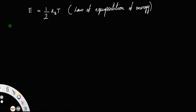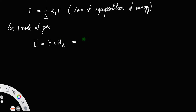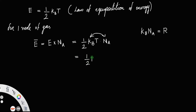If we consider one mole of gas, the average energy E-bar is equal to the energy per molecule multiplied by Avogadro's number N_A. So E = (1/2) k_B T × N_A. Since k_B × N_A equals the universal gas constant R, this simplifies to (1/2) RT — that is the energy associated with one mole of a gas.